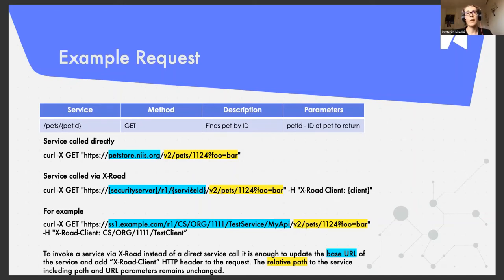The only thing that changes is that the base URL is replaced with the security server URL. Then R1 is the version number of the security server's REST API. And then service ID is an identifier that identifies the service that we are invoking. So in this case, the service ID would be reference to this PetStore API. But the service provider, when the service is published via X-Road, is free to decide the ID of the service within certain limits. And then the sender information system is identified by using X-Road client HTTP header. And similarly, the client identifies itself using an X-Road identifier.